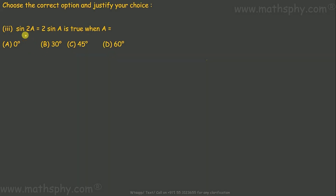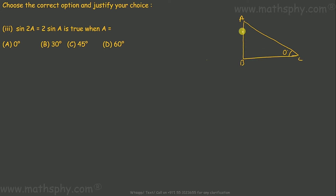It says sine 2a is equal to 2 sine a is true when a has 0 degree, 30, 45, or 60. Let's see what is the value for sine 0 degrees. If this is 0 degrees, it means if I write it as a, b and c — a, b goes to 0, and a, c goes into b, c, meaning a, c and b, c become equal. So in this case, a, c is equal to b, c and a, b is 0.